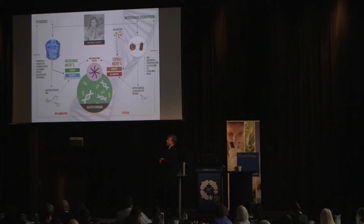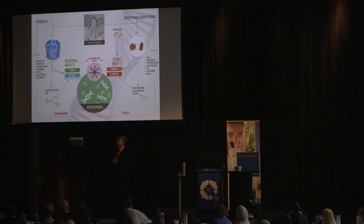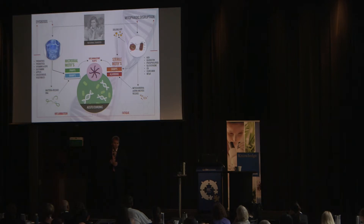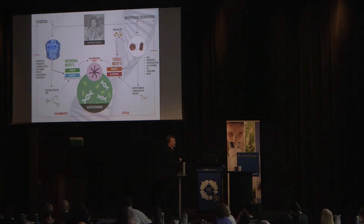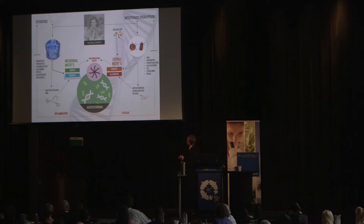What about mammalian target of rapamycin? How would we switch on mTOR, which sits within the mitochondria? You live in a wine-growing region — resveratrol. Resveratrol is a food compound that switches on mTOR, and mTOR helps reduce damage to the mitochondria. On the other side, we've got prebiotics, probiotics, vitamins A, D, and K, glutamine, apples, and cruciferous vegetables.